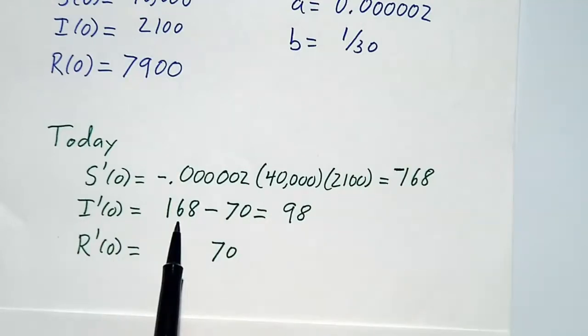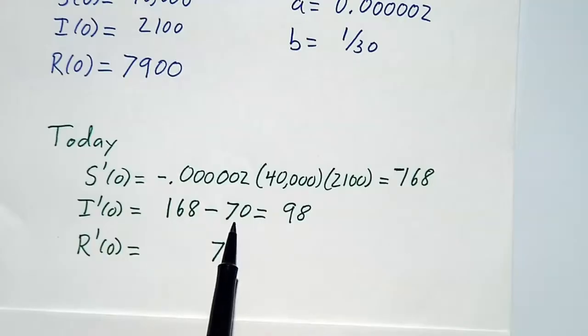And I prime, well, that's the 168, that's the aSI, minus 1/30th of I. 1/30th of I is 70, and that works out to 98. And R prime is 1/30th of I, and that's 70.